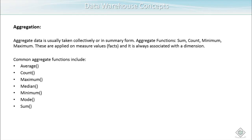In data warehouses we create aggregated tables. If I create three aggregated tables — one for the year, one for the quarter, and one for the month — then if a user wants to see revenue for a particular year, that query will hit the aggregated table at the year level. That table has only one record containing the summation of revenue for the complete year, making it 365 times faster than the previous query.